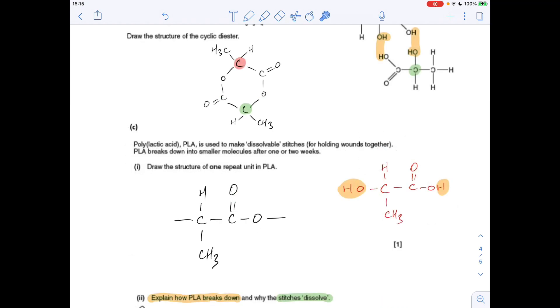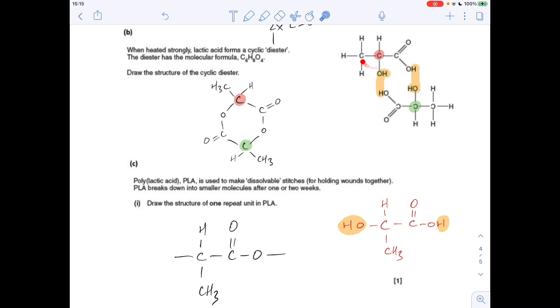Next part of the question. Polylactic acid PLA is used to make dissolvable stitches for holding wounds together. It breaks down in smaller molecules after one or two weeks. Draw the structure of one repeat unit in PLA. If you think about that, that's the structure that was given. All I've done is I've redrawn this carbon here so that the OH, the alcohol group, sticks out at one side. And obviously the carboxylic acid group was already sticking out on the right-hand side. So I've just reconfigured the groups around this carbon. And then you can see what I've done. I've just sort of highlighted out the OH and the H to make a water molecule, which is what will happen when this combines to form the condensation polymer. So the way I've done it, that would be my repeat unit.